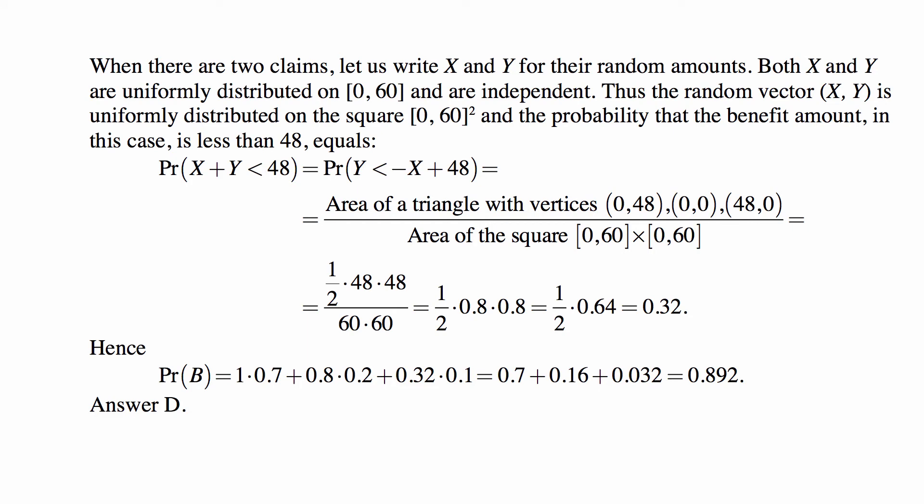When there are two claims, let us write X and Y for their random amounts. Both X and Y are uniformly distributed on 0 to 60 and are independent. Thus the random vector (X,Y) is uniformly distributed on the square [0,60] × [0,60]. And the probability that the benefit amount in this case is less than 48 equals probability that X + Y is less than 48, which is the same as probability that Y is less than -X + 48. Which is graphically, the answer is what fraction of the area of the square [0,60] × [0,60] is taken up by the region where Y is less than -X + 48.